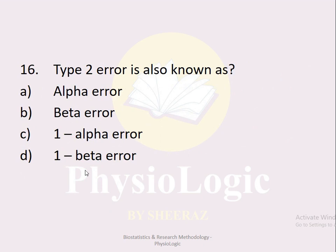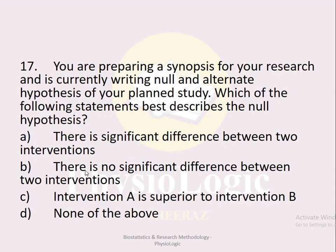MCQ number sixteen: Type 2 error is also known as: alpha error, beta error, 1 minus alpha error, or 1 minus beta error. The correct option is option b, beta error. Type 1 error is known as alpha error and type 2 error is known as beta error.